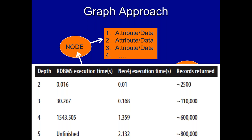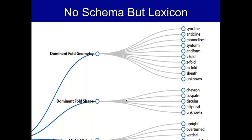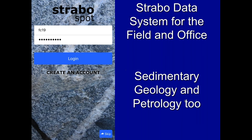We took a graph approach, and of course schema is relaxed. We work with community groups to build a lexicon of words — what do they mean, how are they related. For example, looking at fold geometry, a fold can have shapes, and you can have different aspects to it. We keep everything together spatially — we call that nesting — and also keep things together logically by adding labels, tags, or relationships to aspects of the geology.